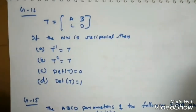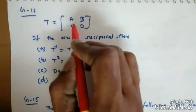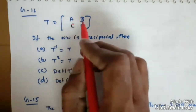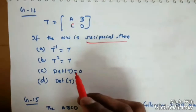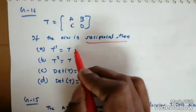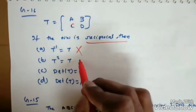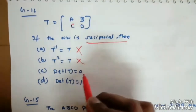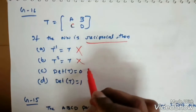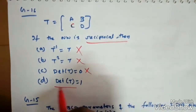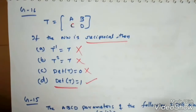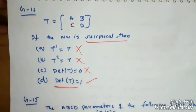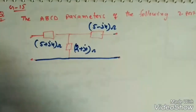For reciprocal networks using T-parameters, T² = T is not the condition. The only condition that satisfies reciprocity is det(T) = 1, that is the determinant of the ABCD matrix equals 1. Now this is a GATE 2015 question where we need to find the ABCD parameters of the given two-port network.